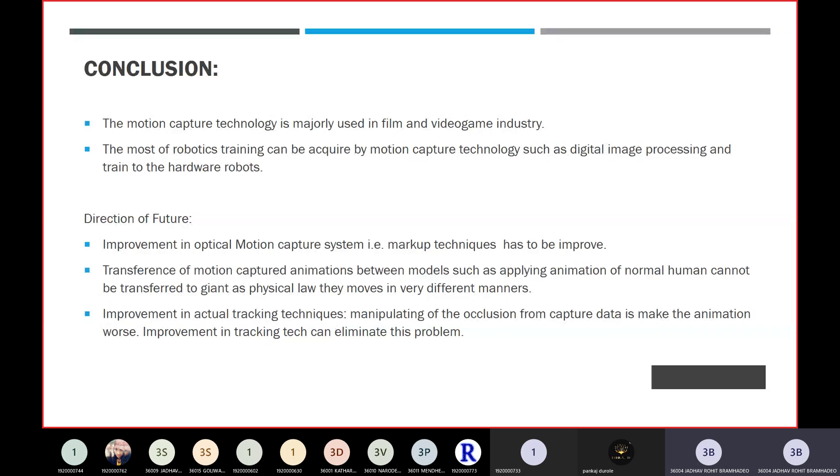People have identified what needs to be improved in the future. The direction of future improvements includes improvement in optical motion capture systems, specifically markup techniques need to improve. Sometimes in optical motion capture, it is hard to point out the optimal points, so new inventions have to be made for optical motion technology.